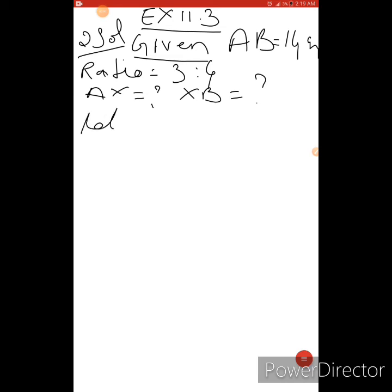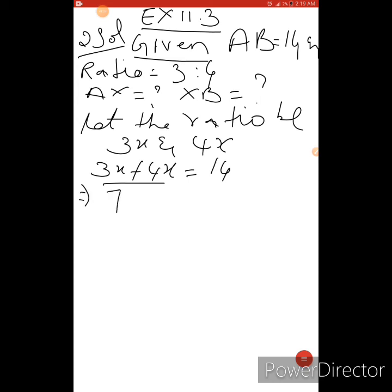Now let the ratio be 3:4. I can write 3X and 4X. Total length is 14 centimeters. So I can add this one. 3X plus 4X equals to 14. Now you add these two. What you will get? 3 plus 4 is 7. 7X equals to 14. X is equals to 14 by 7. 7 twos are 14. Here X value is 2.